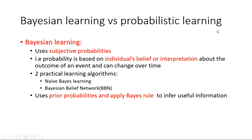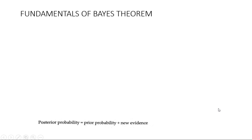What is the difference between Bayesian learning and probabilistic learning? Bayesian learning uses a subjective probability — the probability is based on an individual's belief or interpretation about the outcome of an event, and it can change over time. There are two practical Bayesian learning algorithms and also Bayesian belief networks. Bayesian learning uses prior probabilities and applies Bayes rule to infer information.